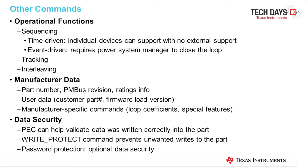Other commands include operational functions such as sequencing. These are time-driven, where individual devices can support with no external support, or event-driven, which requires a power system manager to close the loop. There are operational functions for tracking and interleaving as well. There are also commands to store manufacturer data such as part number, PMBus revision, and ratings info, as well as user data such as customer part number, firmware load version, and manufacturer-specific commands like loop coefficients and special features. There are also commands to ensure data security — for example, PEC (Packet Error Checking) can help validate data written into the part. There is also a Write Protect command that prevents unwanted writes, and commands to protect the password and enable optional data security.